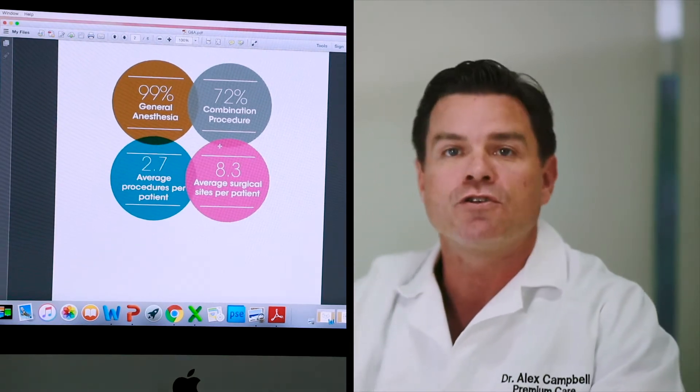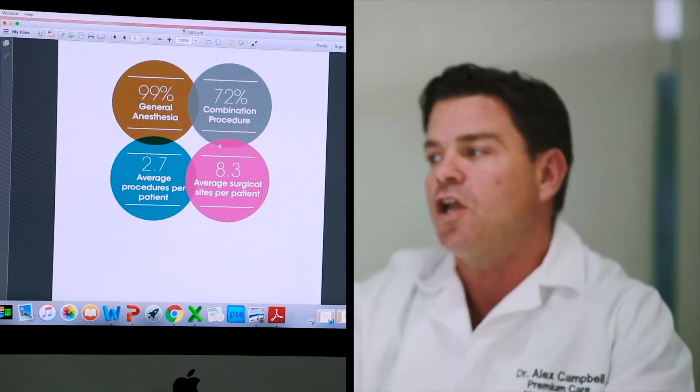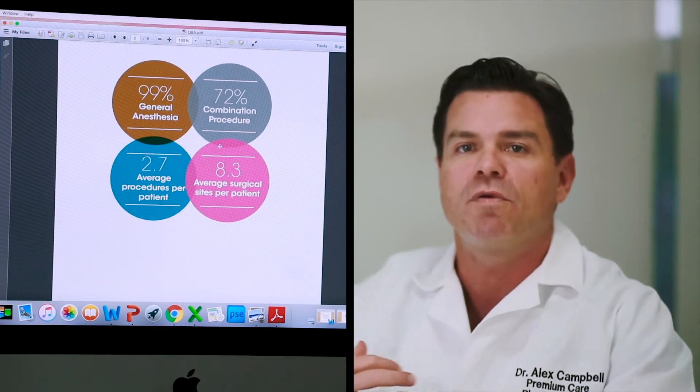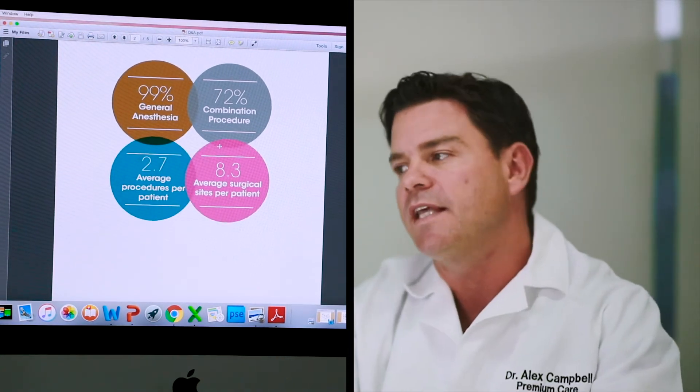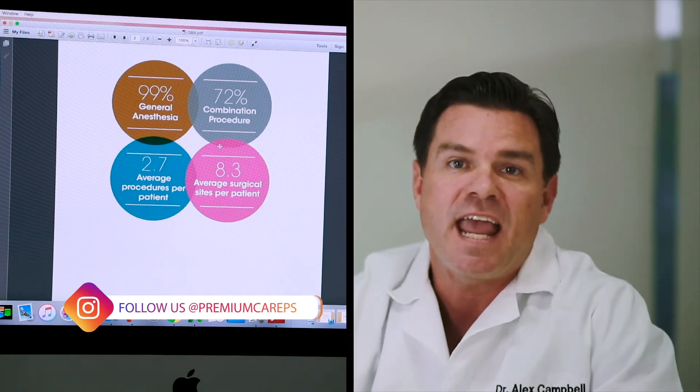And then if you look at surgical sites per patient, when we operate on two breasts or two breasts and the abdomen or two breasts and the abdomen, the buttocks and the two eyelids, the average person is getting eight surgical sites. So lots and lots of surgery here. I think our patients love the fact that we can do so much with two surgeons and give them better results and a quicker recovery.